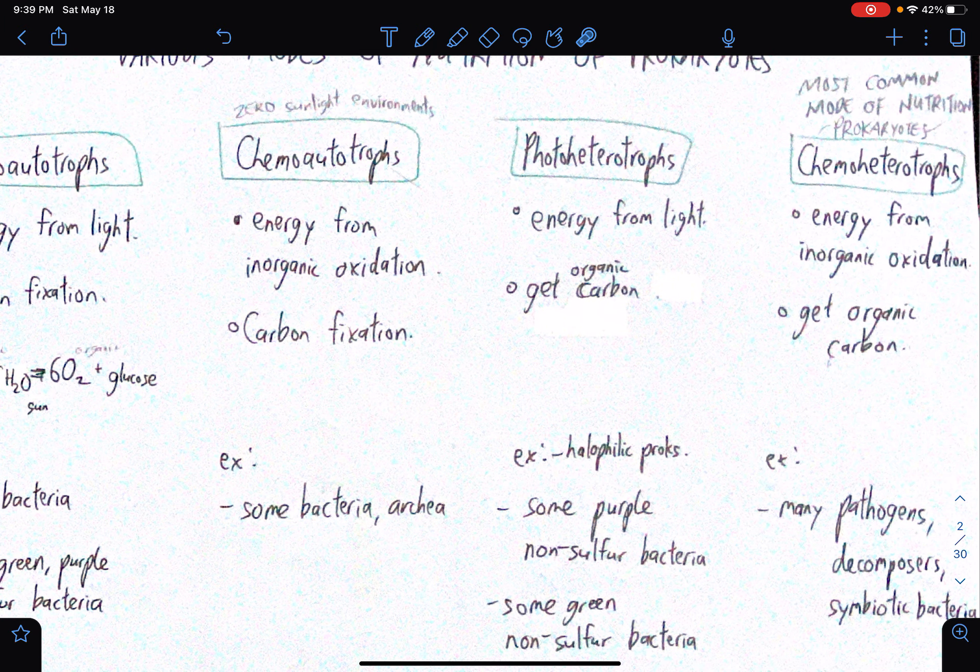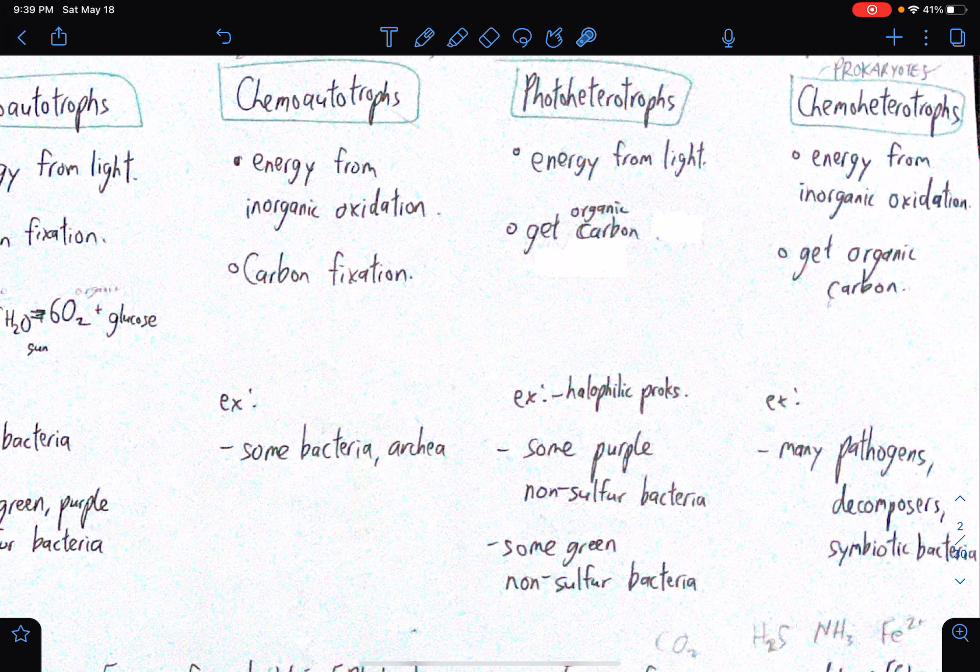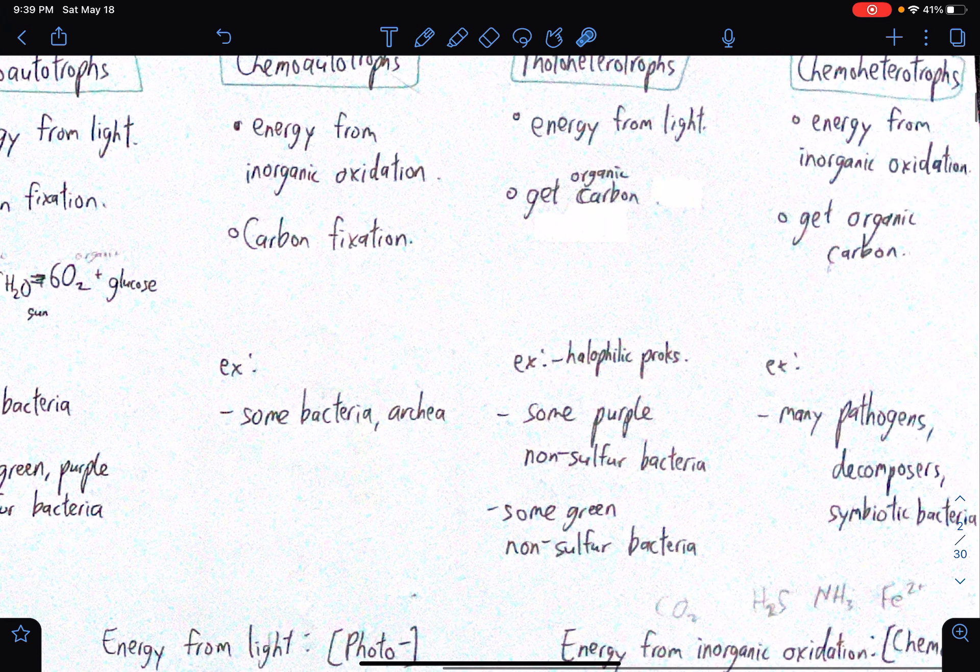How about chemo-heterotrophs? So chemo-heterotrophs get their energy from inorganic oxidation, and they get organic carbon. So this is the most common mode of nutrition for prokaryotes, chemo-heterotrophs. So for instance, what are those prokaryotes that fall under this category? A myriad of pathogens, decomposers, and symbiotic bacteria.